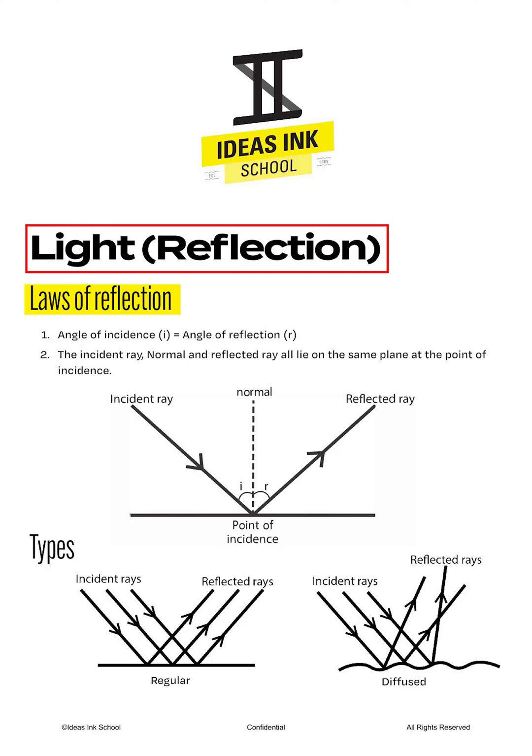We will first learn the two laws of reflection. Number one, the angle of incidence is equal to the angle of reflection. Number two, the incident ray, normal and reflected ray must all lie on the same plane at the point of incidence.